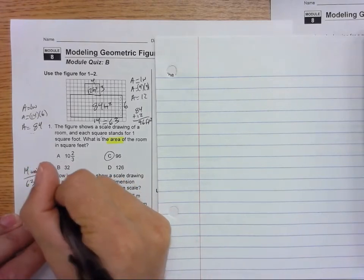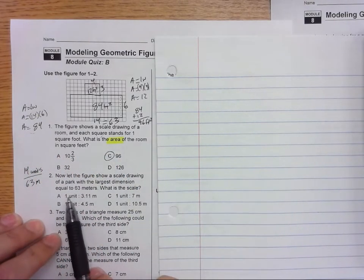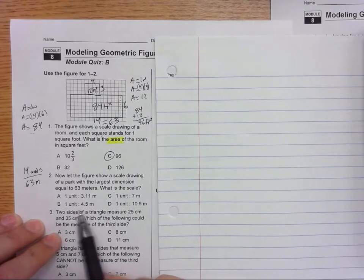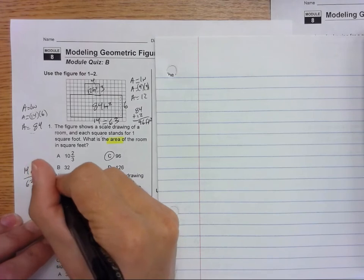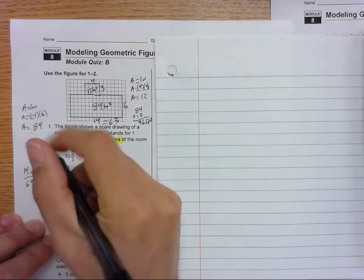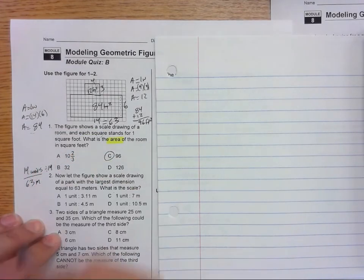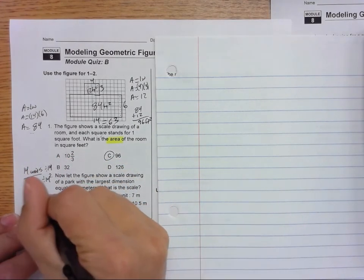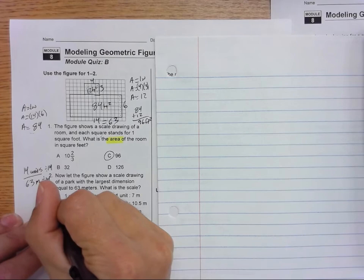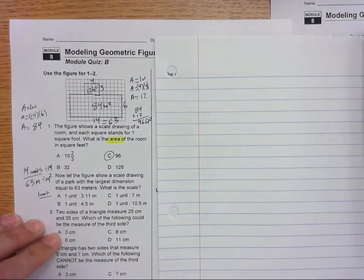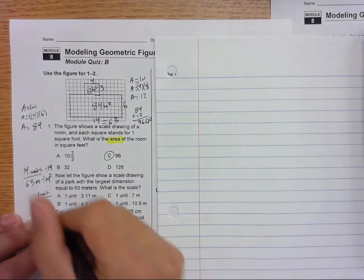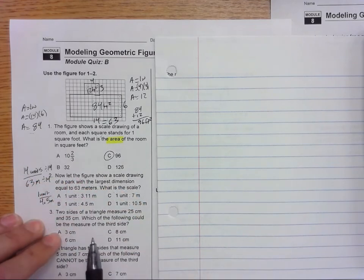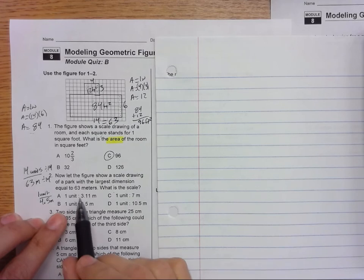Now if we look at our answer options, all of these show that we're talking about one unit. So how do we get this to 1? We have to divide by 14. And if we divide by 14 on the top, we have to divide by 14 on the bottom, which leaves us with 1 unit, and 63 divided by 14 is 4.5 meters.